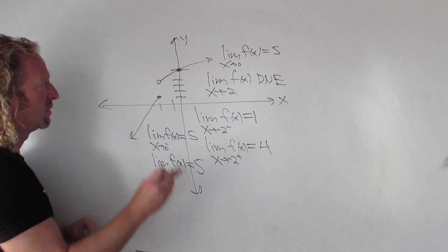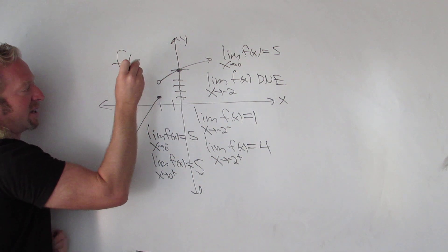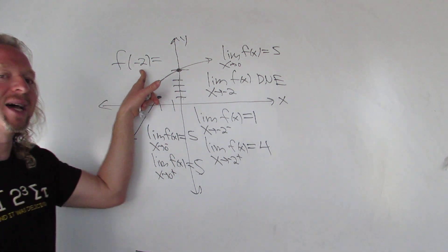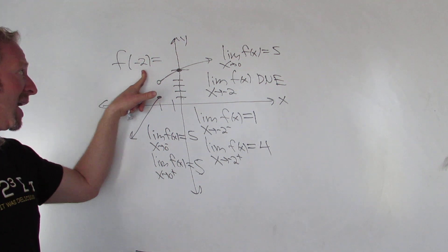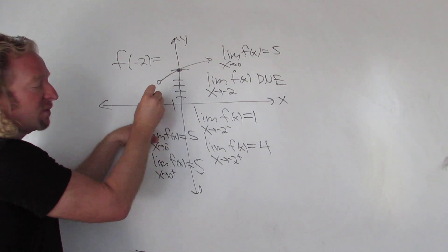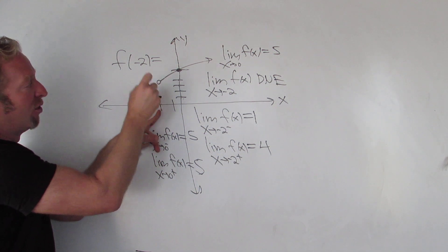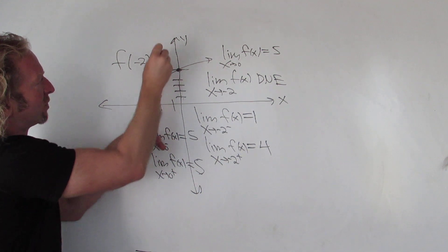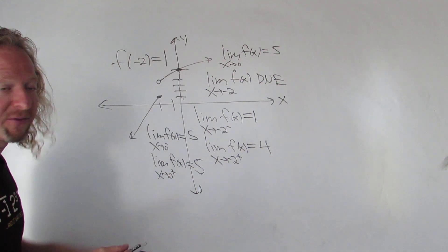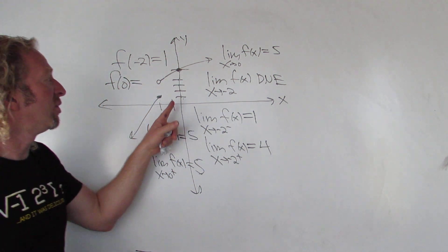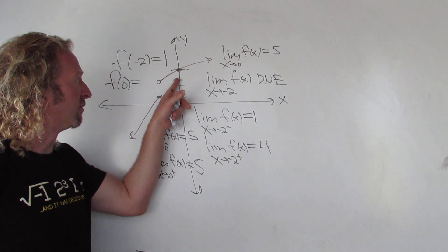Just for fun, let's compute some function values just to make sure you've got all this down. Let's compute f of negative 2. So f of negative 2 is asking, what is the y-value when x is negative 2? Well, when x is negative 2, the y-value is 1, because there's a solid dot there. The hole means you don't go there. So avoid the hole. So the answer is 1. Let's find f of 0. This is asking, what is the y-value when x is 0? So 1, 2, 3, 4, 5. So 5.